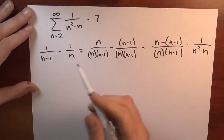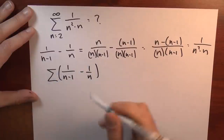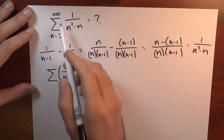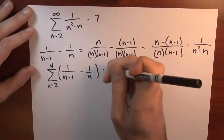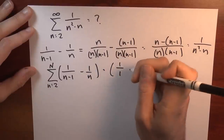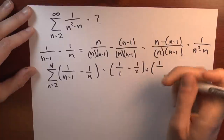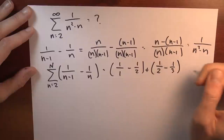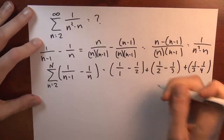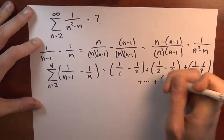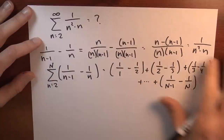So evaluating this series is really the same as evaluating the sum of 1 over n minus 1 minus 1 over n. Before taking the limit to infinity, let's do this from 2 to some value big N. Plugging in n equals 2 gives 1 over 1 minus 1 over 2; n equals 3 gives 1 over 2 minus 1 over 3; n equals 4 gives 1 over 3 minus 1 over 4; and continuing until n equals big N gives 1 over big N minus 1 minus 1 over N.